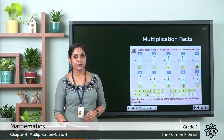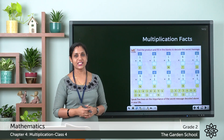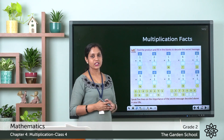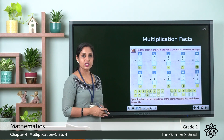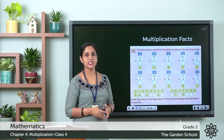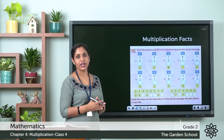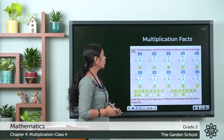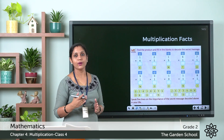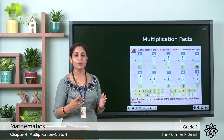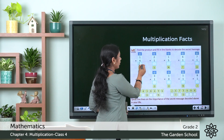Now in your textbook, page number 58, we have some problems to do. We need to find the product and fill in the blanks to decode a secret message. First, let's find the answers. The first one is 1 × 4. When a number is multiplied by 1 we get the number itself, so 1 × 4 = 4.